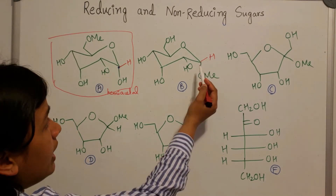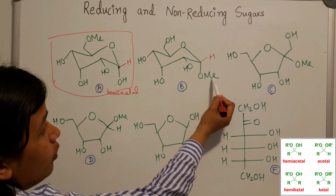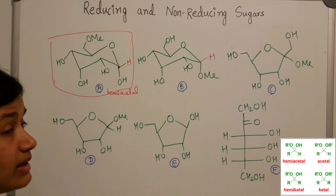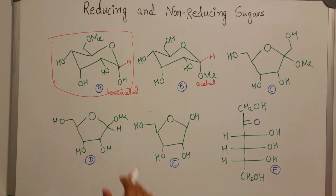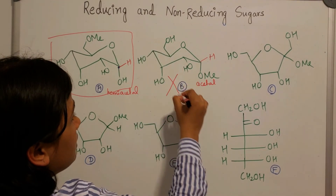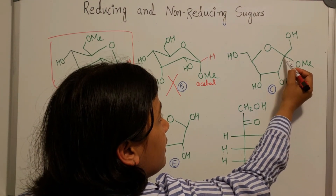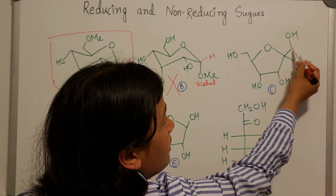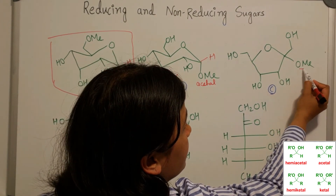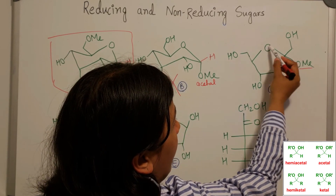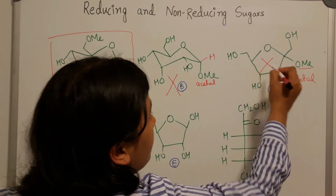For compound C, the anomeric center is coming from a ketone (both substituents are R groups). However, it is not a hemi-ketal because both hydroxides are protected as O-methyl ethers — this is a full ketal, so it is not a reducing sugar. For compound D, the anomeric center is coming from an aldehyde (R and H), but again both hydroxide groups are protected — this is an acetal and therefore not a reducing sugar.